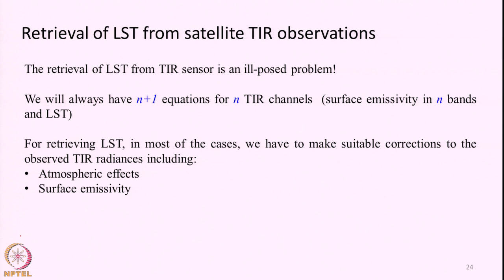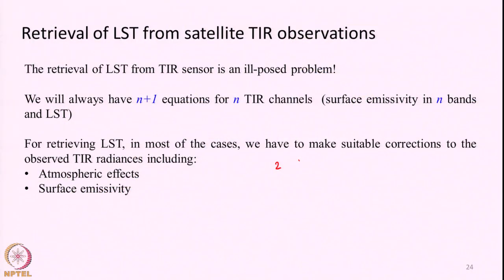The retrieval of land surface temperature from satellite data is an ill-posed problem. For each band of thermal channel we can write one equation. If our sensor has two thermal infrared bands — one around 10.4 to 11.5 micrometers and the next around 11.6 to 12.5 micrometers — we have two thermal channels: thermal channel 1 and thermal channel 2.